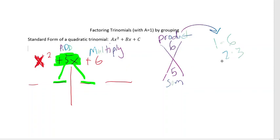Which ones have a sum of 5? 1 plus 6 is 7. 2 plus 3 is 5. So 2x and 3x are how we separate 5x. Now we can bring down what's left, x squared and the positive 6 at the end. Now we have our four terms.